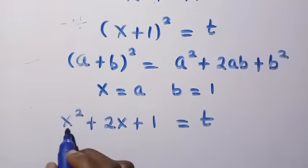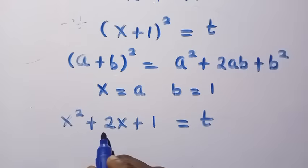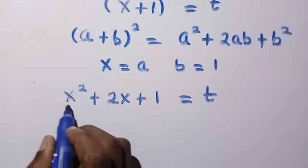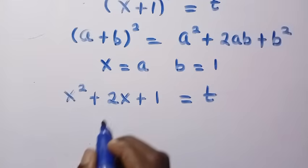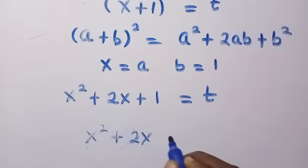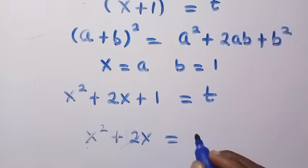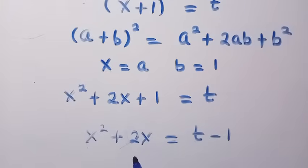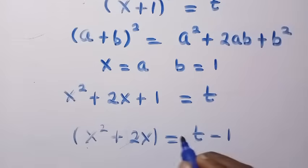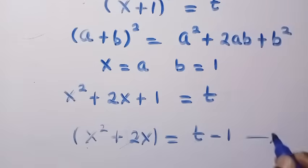We need x squared plus 2x as the subject of the formula. Making it the subject, we take 1 to the other side and get x squared plus 2x equals t minus 1. We will call this our star equation.